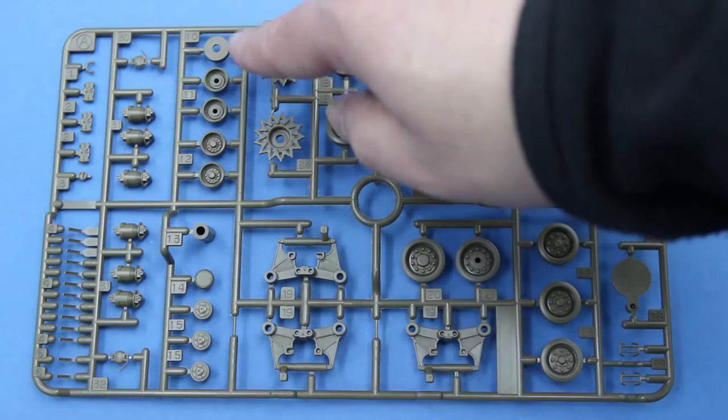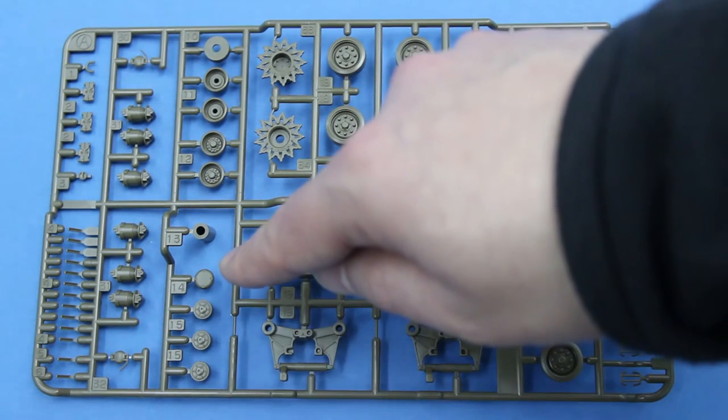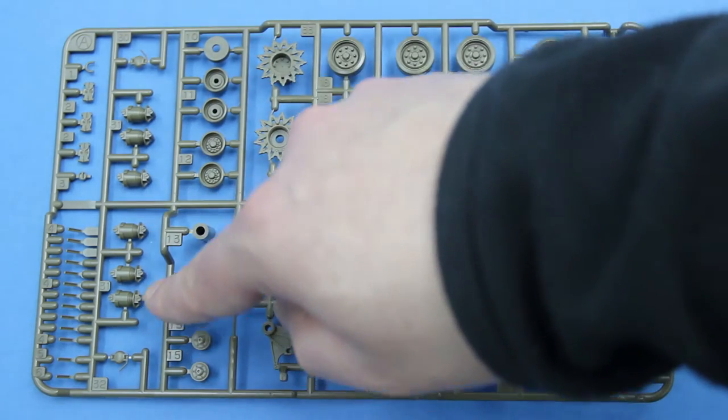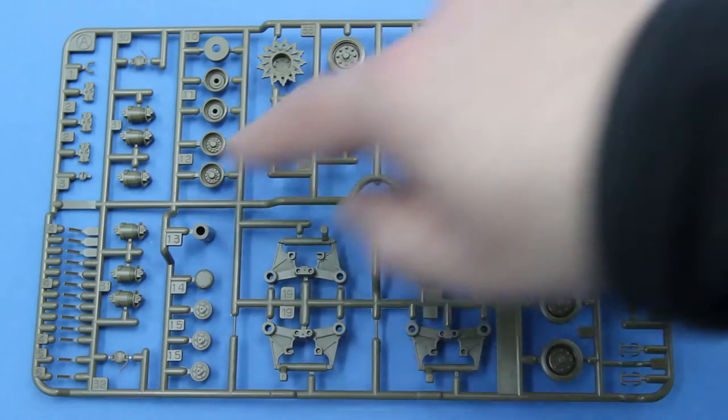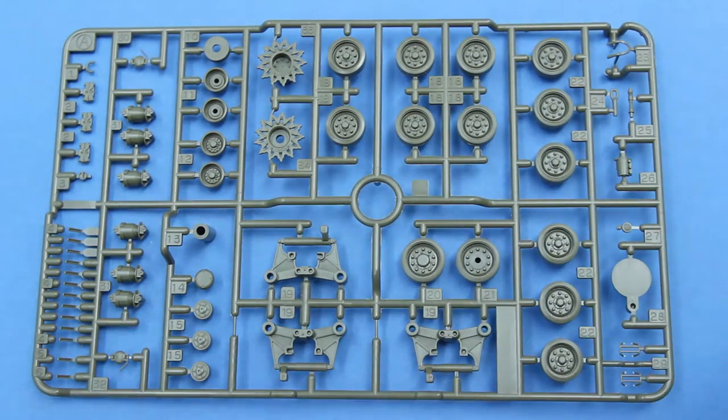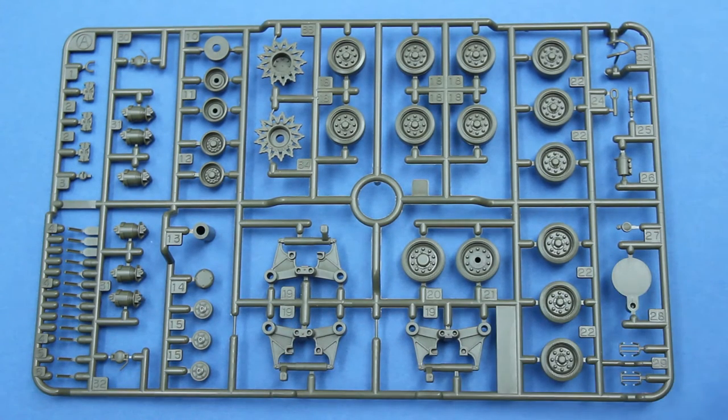And the springs. The horizontal volume springs. These are the stays for the fenders on the sides. Nice separate fuel filler cap there. Brush guards for the lights and the periscopes. And this is to allow figures to be fitted into the hatches.